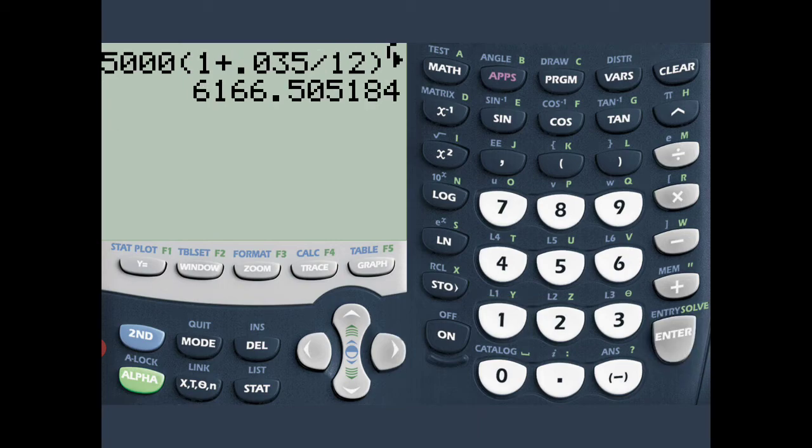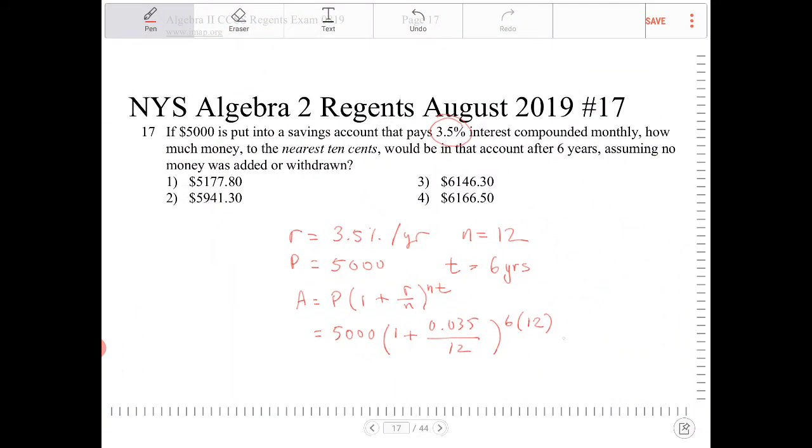And we end up with 6166.5. So this is 6166.5 because it says to round to the nearest 10 cents, and the one that best matches this is option 4.